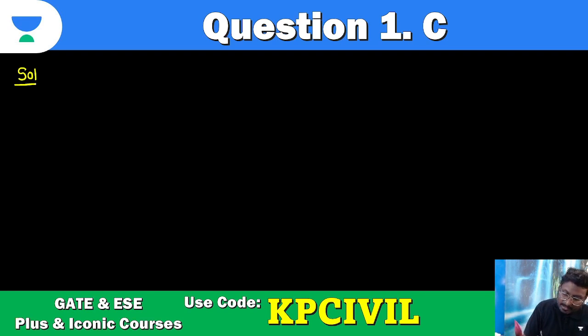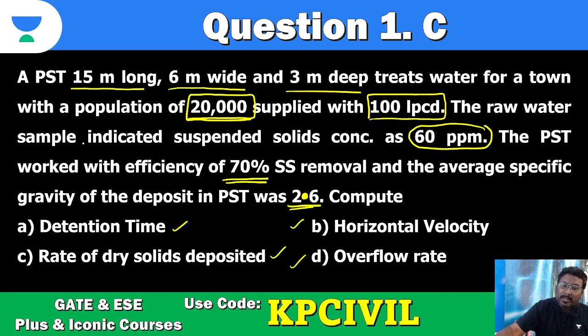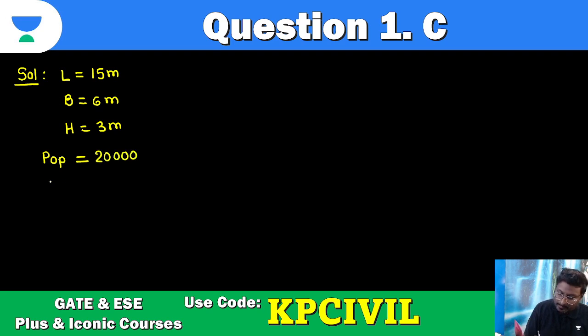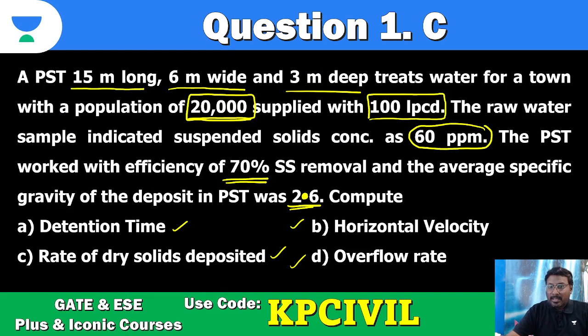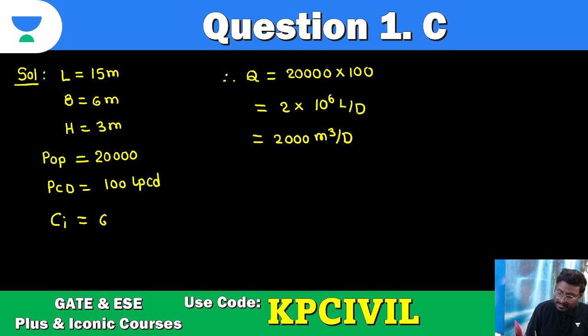First we need to write down the given data: length 15 meter, width 6 meter, depth 3 meter, population 20,000, per capita demand 100 lpcd. So population 20,000, per capita demand 100 lpcd, discharge equals population into per capita demand, 2 into 10 power 6 liter per day, 2,000 meter cube per day discharge. And it is provided initial solids concentration CI, raw solids concentration 60 ppm, efficiency 70%.